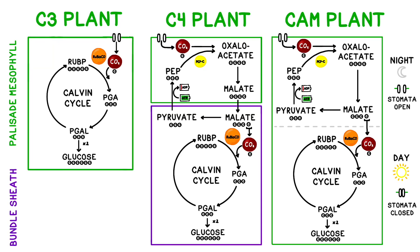Welcome back to BOGO Biology. In this video, we'll be discussing how C3, C4, and CAM plants perform photosynthesis, avoid performing the wasteful process of photorespiration, and we'll go over some practical applications for applying this information in your research or your business.